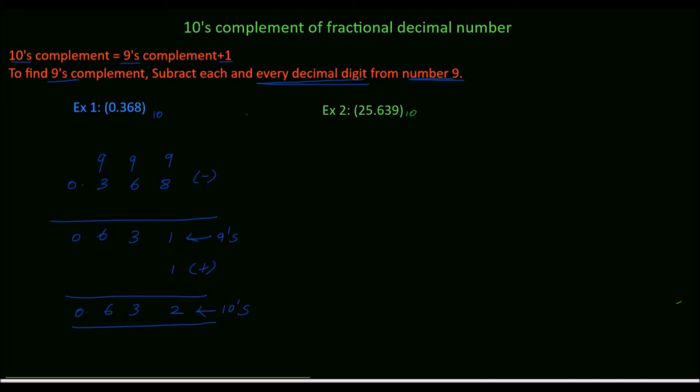Next, we will solve example 2. The fractional decimal number is 25.639. Subtract the digits from 9 to get the 9's complement.